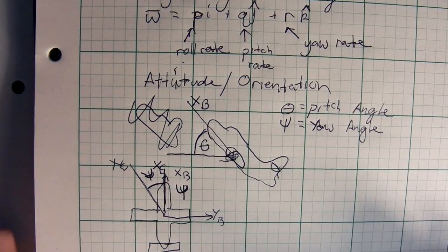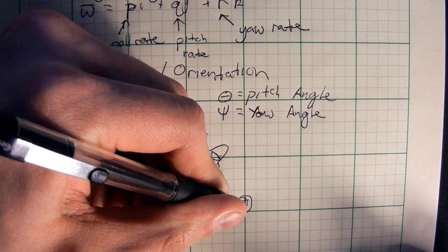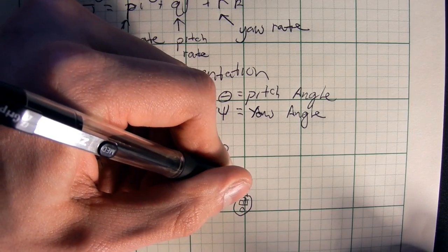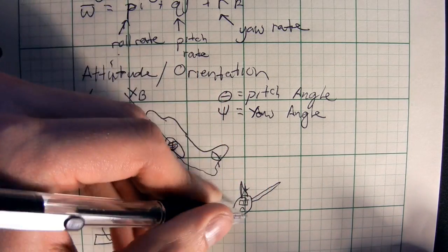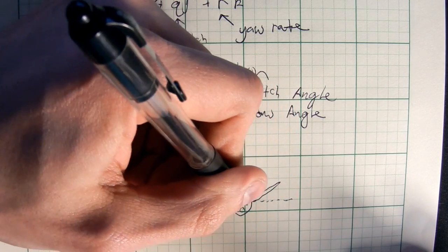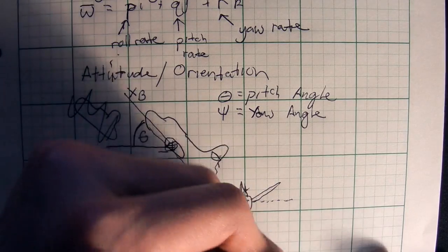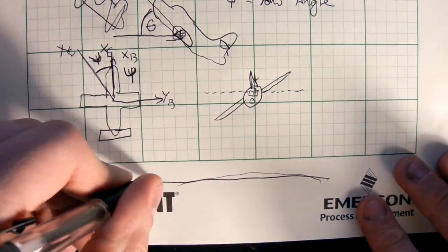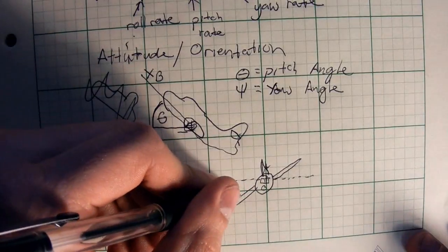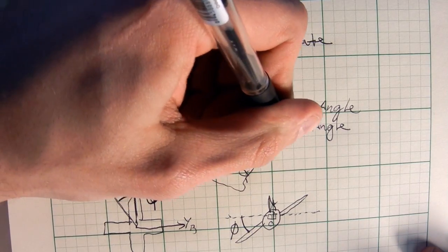And then our final picture — a plane drawn coming straight at us — shows the roll angle. We have the earth axis considered parallel with the earth, and the body axis. This angle between them is known as the roll angle, denoted as phi.